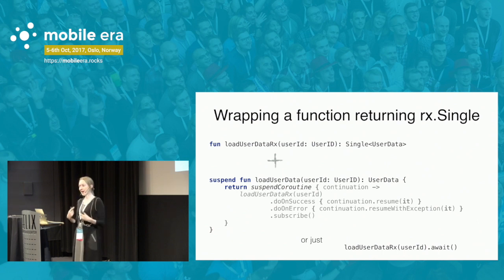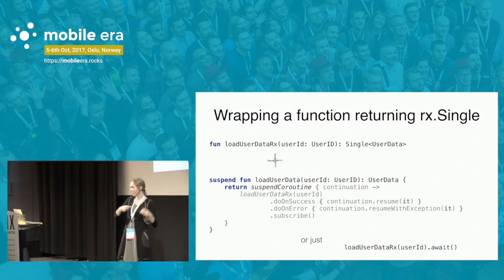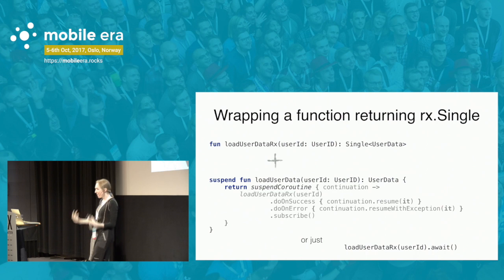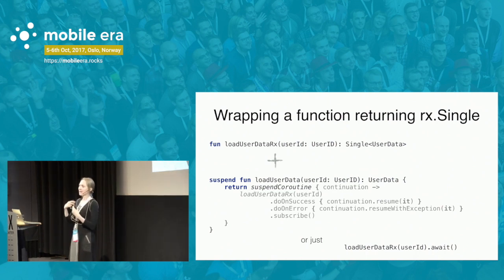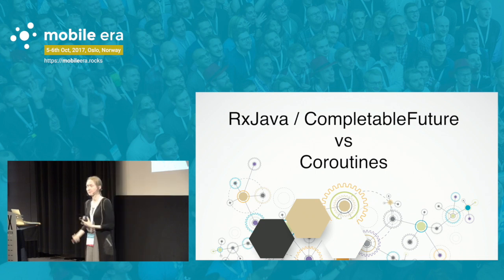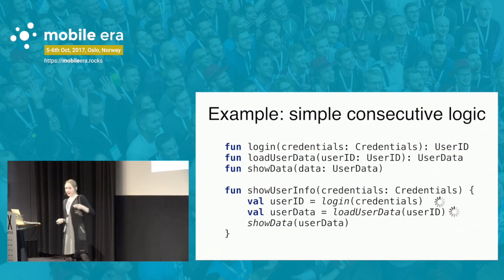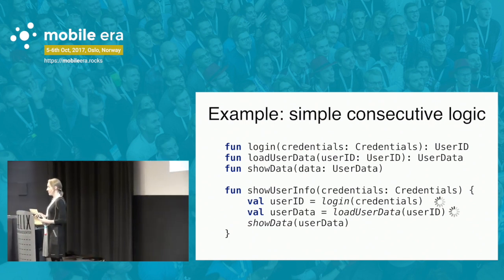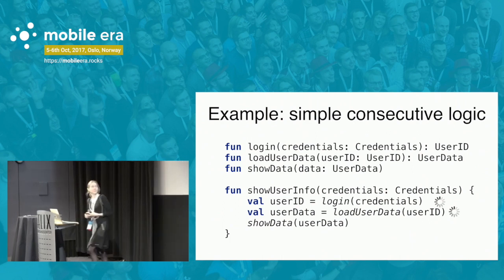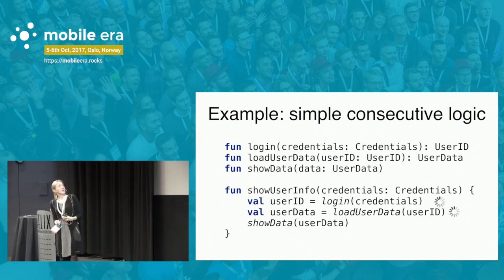I expect you're wondering how coroutines interoperate with RxJava, because they basically try to solve the same problem of performing asynchronous computations. To answer this, let me rewrite the same logic using RxJava and completable features. With suspend functions, the code is sequential. With CompletableFuture, you have to wrap login and load data functions so they return a CompletableFuture promise. With RxJava, the method names are different — you probably already use flatMap in this context — but you still have to wrap results into a Single rather than returning the value directly.